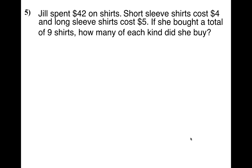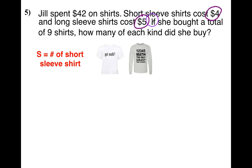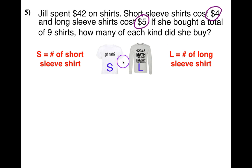Number five: Jill spent $42 on shirts. Short-sleeved shirts cost $4 and long-sleeved shirts cost $5. She bought a total of nine shirts. How many of each kind did she buy? This one is different — we're going to need two equations with more than one variable. I'll use S for short-sleeved and L for long-sleeved. You could use X and Y, but S and L make it easier to see what each variable represents.